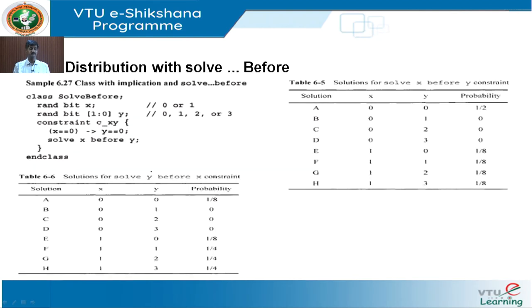Now, guiding distribution with solve and before: using a class with an implication — solve x before y. I have two implication constraints: x equals zero implies y equals zero, and solve x before y. So I am taking zero-zero as a solution probability of one out of two; these three fail to solve it.